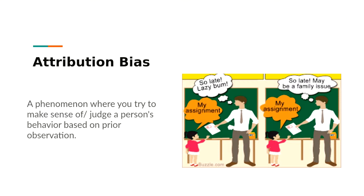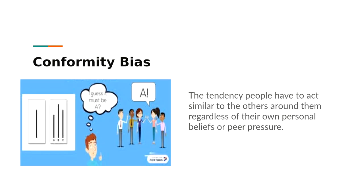Conformity bias is the tendency people have to act similarly to others around them regardless of their own personal beliefs — it has a lot to do with peer pressure. For example, if everyone answers 'A' but you know the answer is 'B,' you'd still go with the group because you don't want to stand out. A way to avoid this is by submitting answers anonymously, so you get a wide range of answers reflecting what people truly believe.